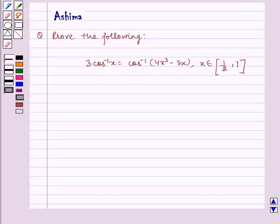Hi and welcome to the session. Let us understand the following question today. Prove the following: 3 cos inverse x is equal to cos inverse of 4x cube minus 3x, where x belongs to the closed interval half comma 1.